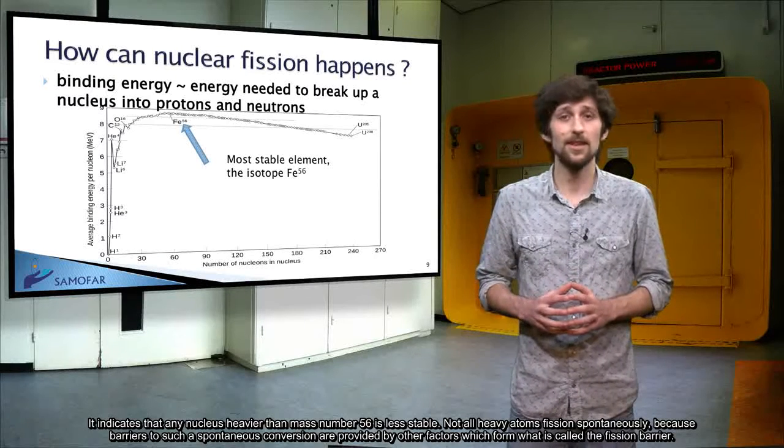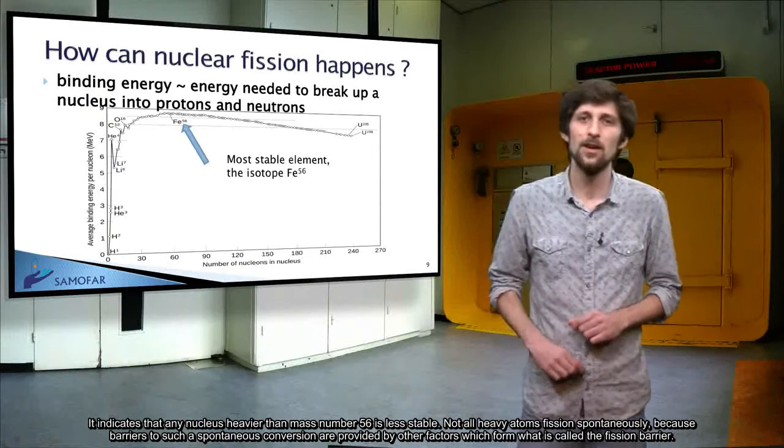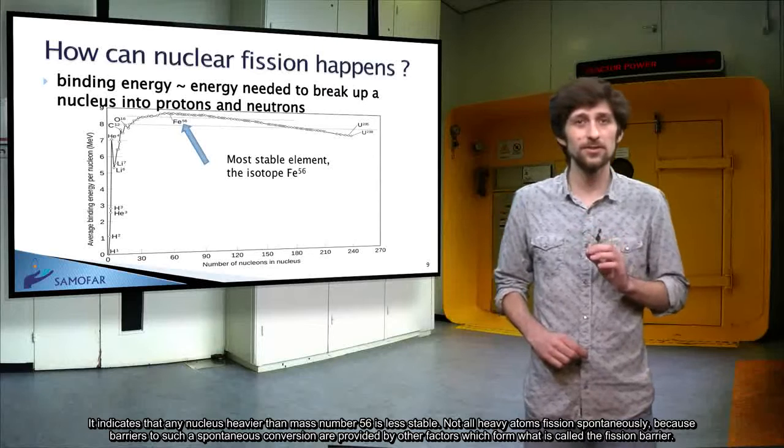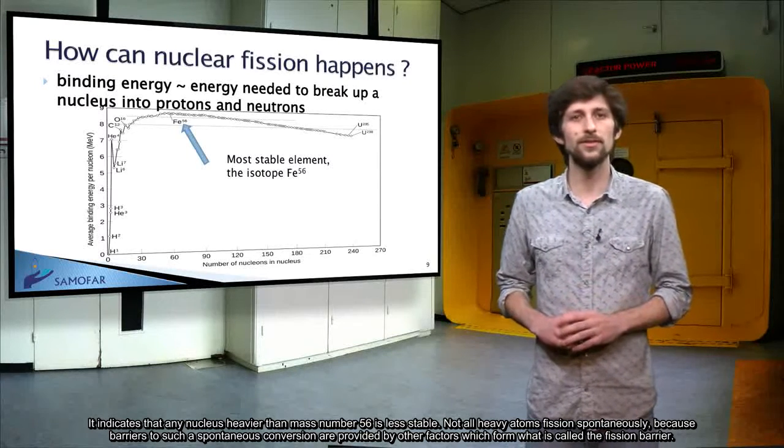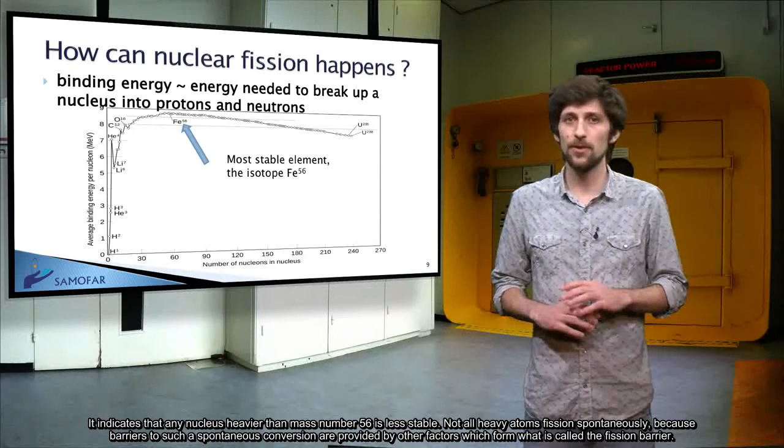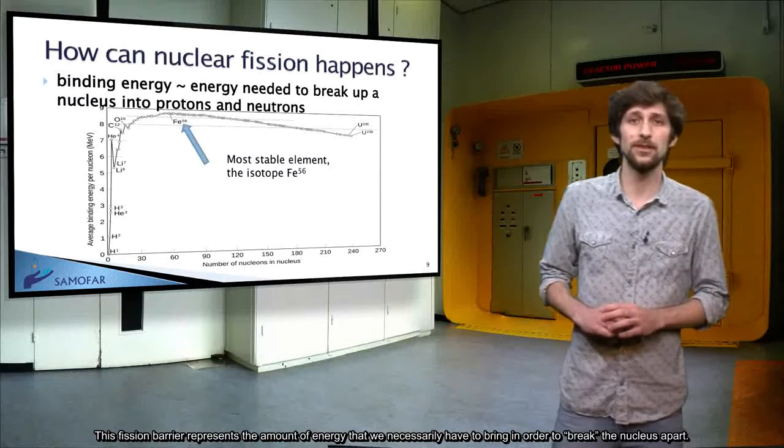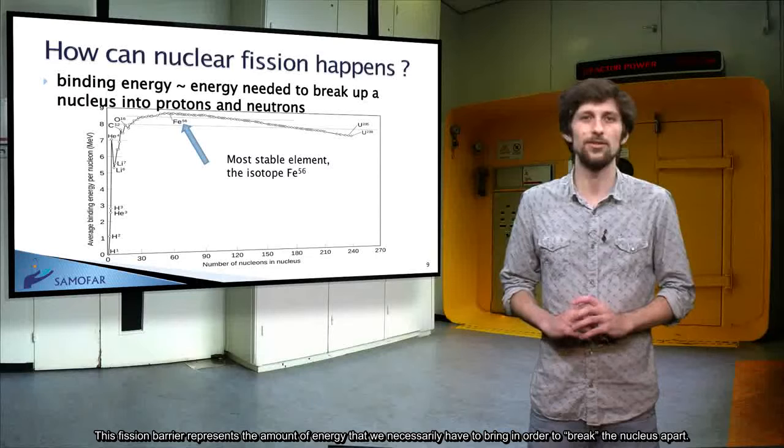It indicates that any nucleus heavier than mass number 56 is less stable. Not all heavy atoms fission spontaneously, because barriers to such spontaneous conversion are provided by other factors, which form what is called the fission barrier. This fission barrier represents the amount of energy that we necessarily have to bring in order to break the nucleus apart.